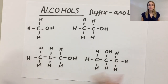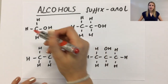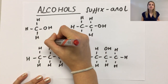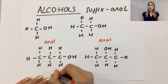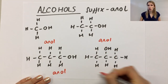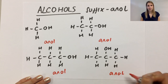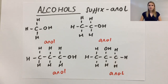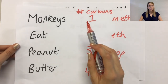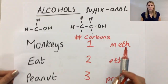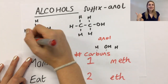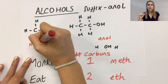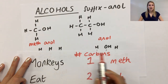The first thing we're going to do with the naming is put the suffix down, because since it's got the OH group, all of them are going to end in anol. Then I'm going to look at how many carbons it's got. This first one has one carbon, which means — using our 'monkeys eat peanut butter' — it must have a prefix of meth, so that makes it methanol.